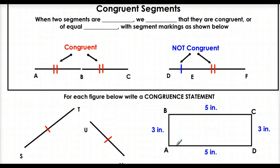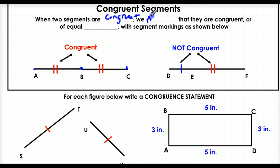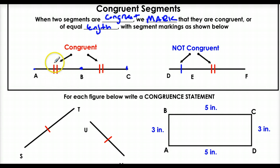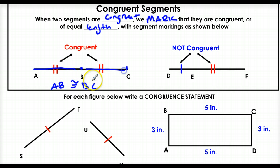So, congruent segments. In geometry we have to learn how to mark things. When two segments are congruent, we mark that they are of equal length with segment markings. If two things are congruent, we put these little scratch marks to say they're congruent. Since this segment has two marks and this one has two marks, AB is congruent to BC — those two marks on each indicate they're congruent.